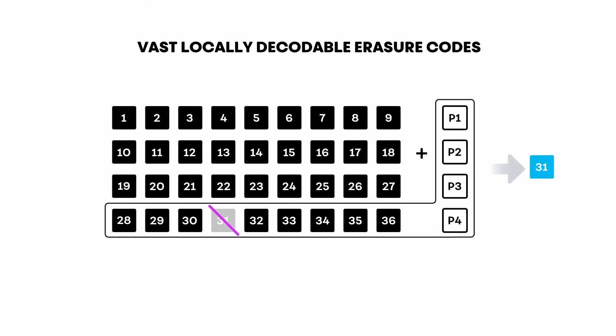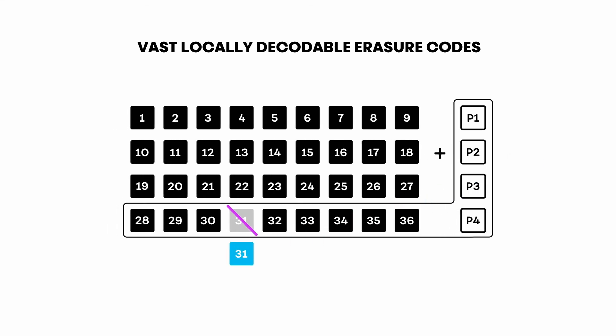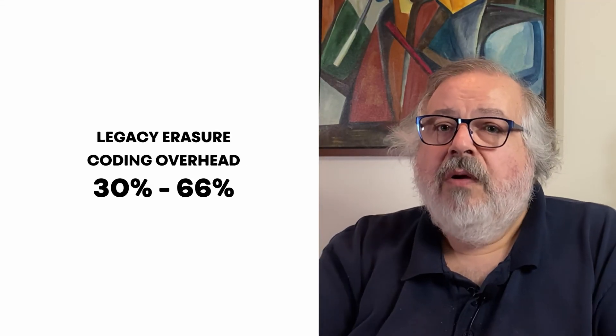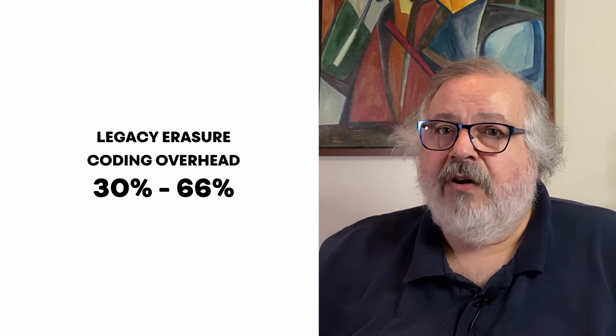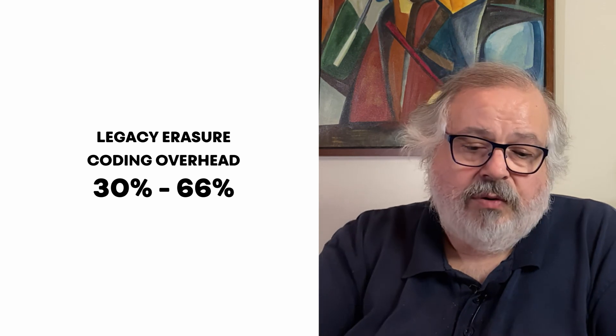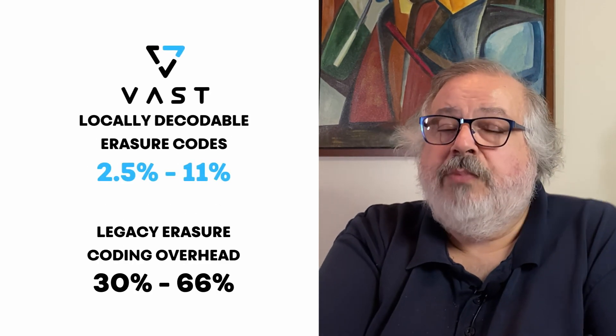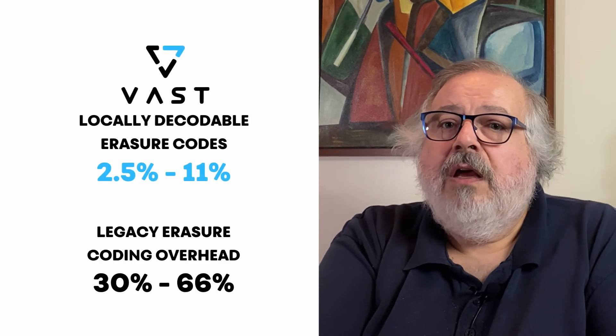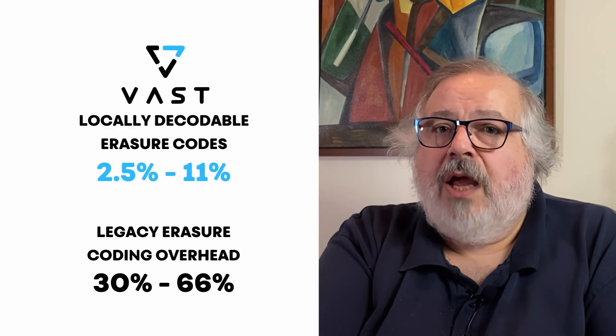So instead of having a practical limit of 16 data strips per stripe, we can write 150 data strips per stripe. Because both making the rebuild faster and minimizing the number of strips we need to rebuild, we can perform a rebuild from that very wide stripe and therefore only use a little less than 3% for data protection.